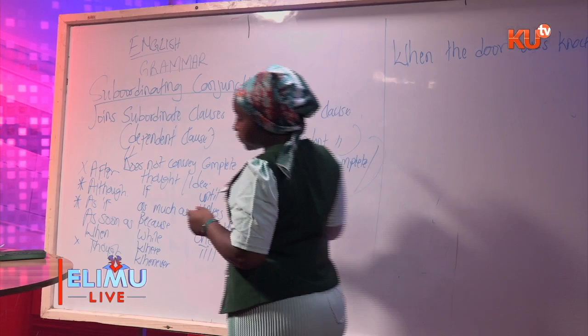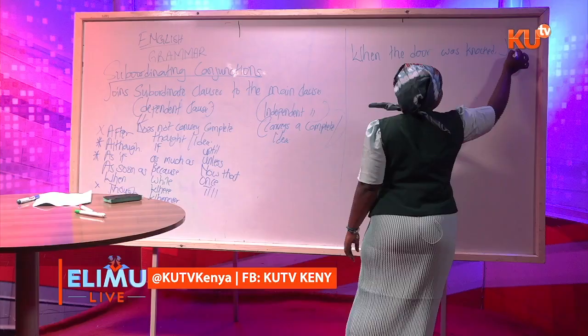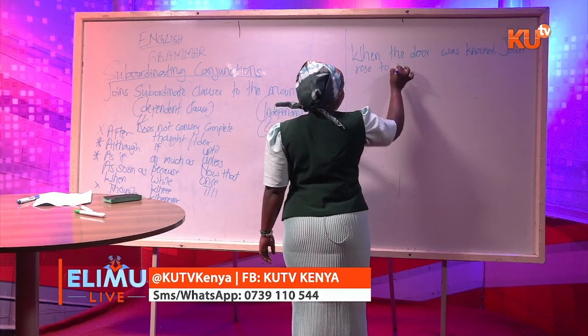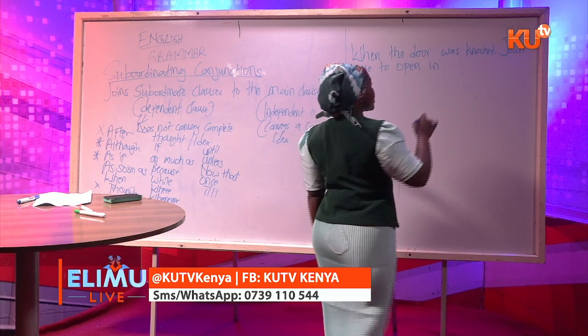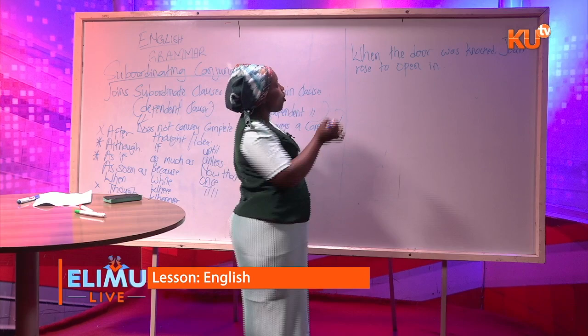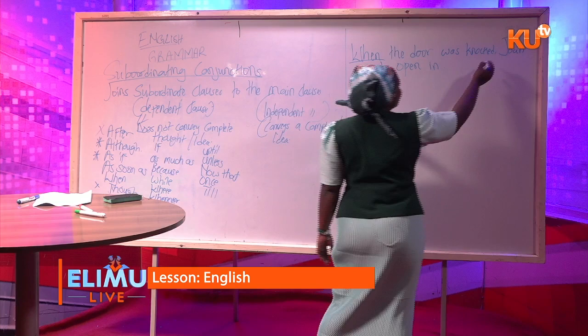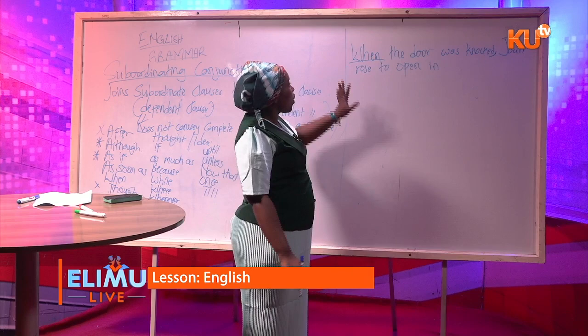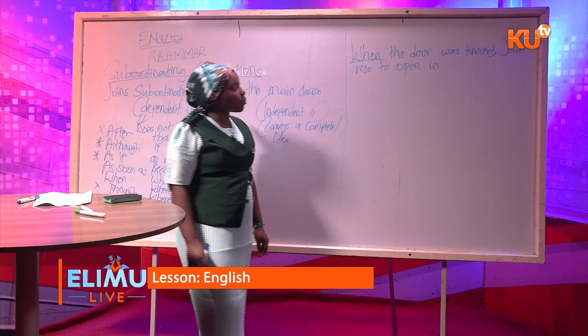In the sentence 'when the door was knocked, Joan rose to open it,' 'when' is our subordinating conjunction. You can see we have two parts in this sentence separated by a comma. You are supposed to ask yourself: which clause is conveying a complete thought, and which one is not?